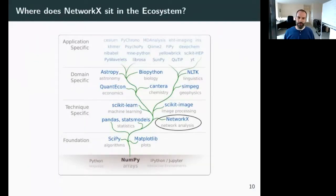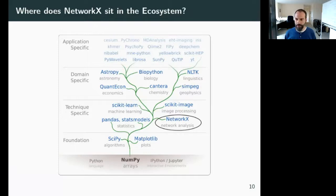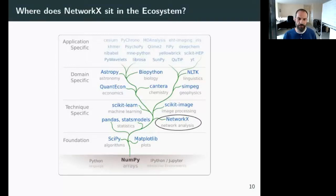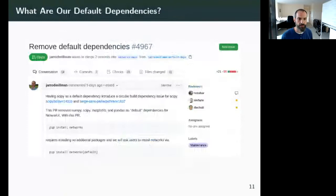Where does NetworkX sit in the ecosystem? This is a diagram that Stefan van der Walt and I made for the NumPy paper. NetworkX's main graph data structure is built on dictionaries, not NumPy, but we do provide spectral graph theory support through a linear algebra subpackage built on top of NumPy arrays and SciPy sparse matrices. Just recently, we released a new version of NetworkX where we added NumPy, SciPy, matplotlib, and pandas as default dependencies.